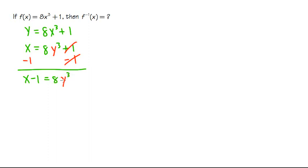As we can see, we have 8 times y to the third power, therefore we need to divide both sides by 8 first, so that the 8 and the 8 will cancel. And let me just divide the entire left-hand side by 8. A big fraction bar and an 8 on the denominator.